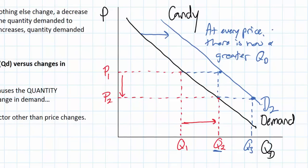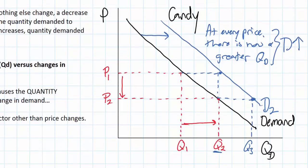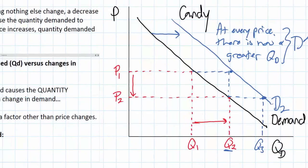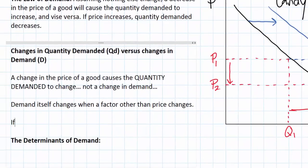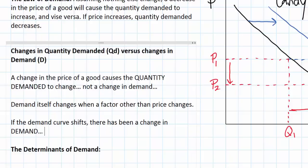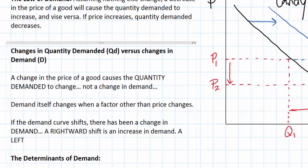This is what happens when there is an increase in demand. Demand for candy has actually increased so that even though the price stays the same — for example at P1 — we now have a greater quantity demanded. This is the distinction between an increase in the quantity demanded and an increase in the demand itself. If the demand curve shifts, there has been a change in demand. A rightward shift is an increase in demand. A leftward shift, or an inward shift, is a decrease in demand.